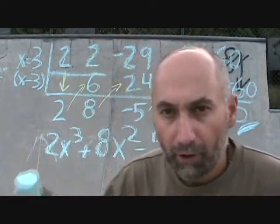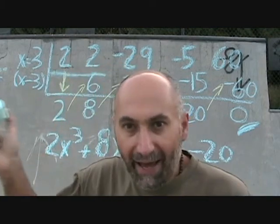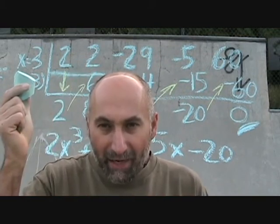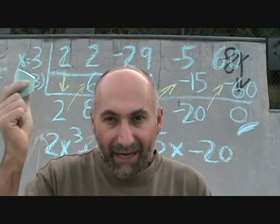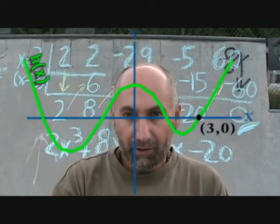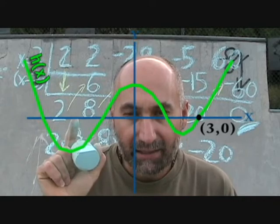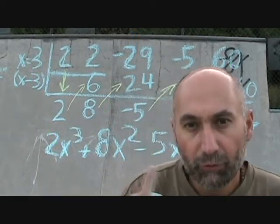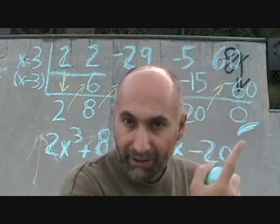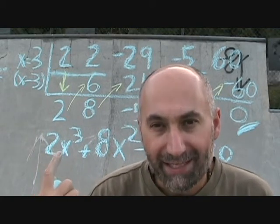x minus 3 is a factor of the original polynomial. Our original polynomial started with x to the power of 4, and we just divided out an x term, so our quotient is now x to the power of 3. We can write that out with the variables: 2x cubed plus 8x squared minus 5x minus 20. So x minus 3 times this expression gives us our original polynomial. This is our divisor, that's our dividend, this is our quotient, and that's our remainder.